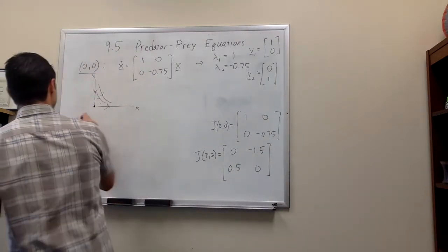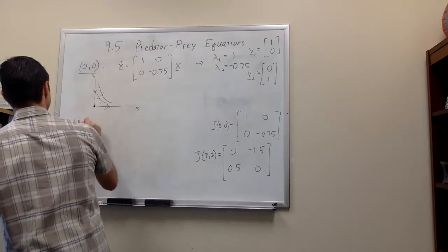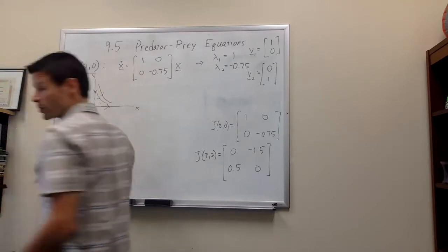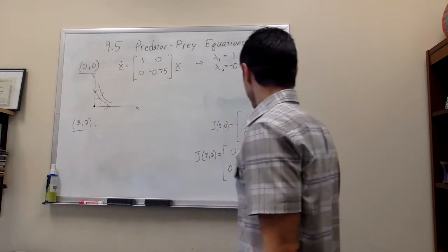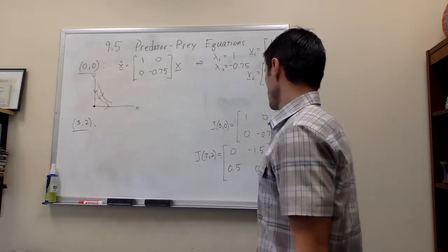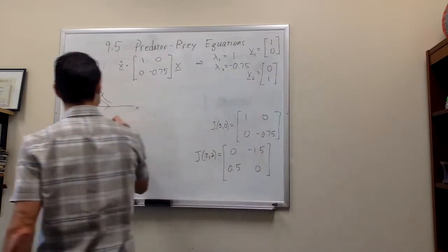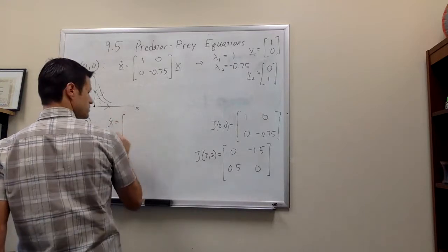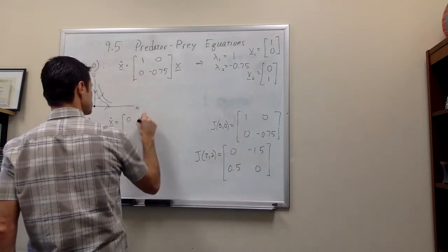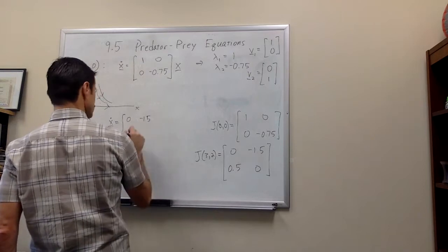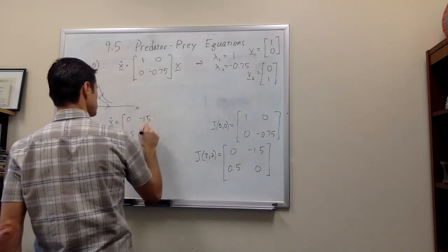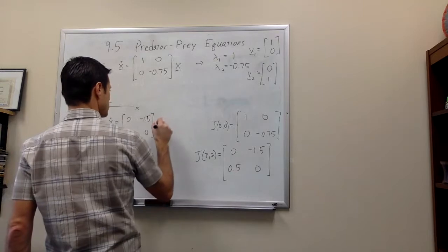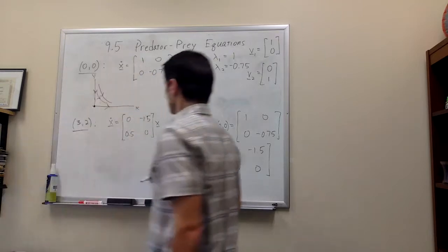So now let's look at the other fixed point, or critical point. Sometimes the critical points are called fixed points. So at 3, 2, now we look at the system that looks like this.